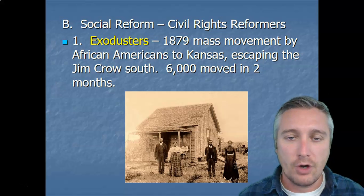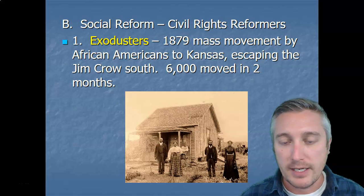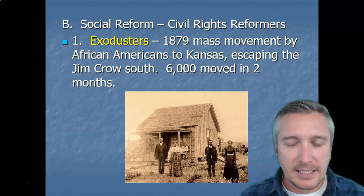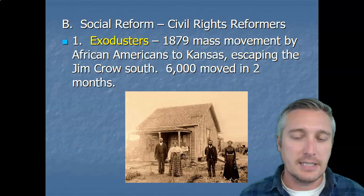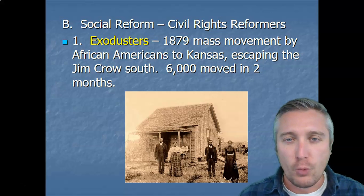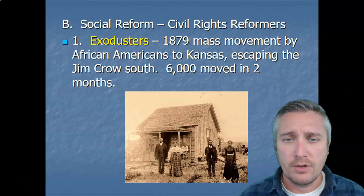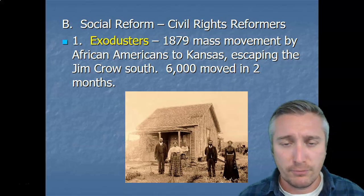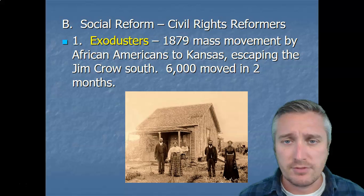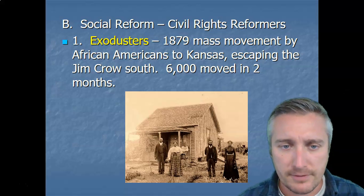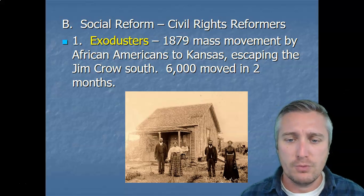Now we're going to switch gears and highlight some of the racial issues created or exacerbated during the Reconstruction era. In 1879 — about two years after Reconstruction supposedly ended — you have kind of the first wave of African Americans moving out of the South. It is not easy to move across the country. It often takes money and time, and frankly, the poor people who had recently been freed — only 14 years after the Civil War, this is not ancient history — many of them were previously unable to move. But you have kind of this first wave out of the South.